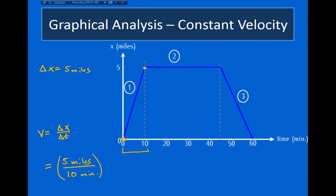If I want to write this in miles per hour, I multiply by 60 minutes over one hour. I put the minutes in the numerator so it cancels with the minutes in the denominator. The 10 cancels with that zero, so we've got five times six. This is 30 miles per hour.